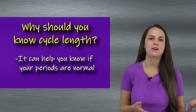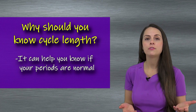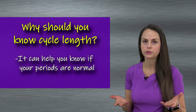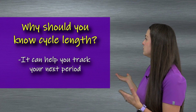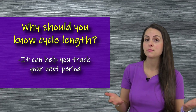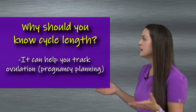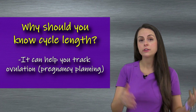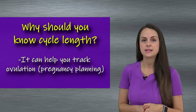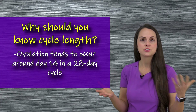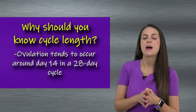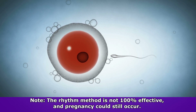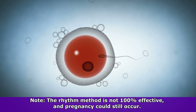Finally, why is it beneficial to know your menstrual cycle length? It's helpful in understanding if you're having normal regular periods — is it occurring within that 21 to 35 day cycle? It also helps you know when to expect your next period. In addition, it can help you track ovulation if you're trying to increase your chances of getting pregnant or preventing pregnancy. Ovulation, if you have an average cycle of 28 days, tends to occur on cycle day 14 — letting you know when to try to conceive or when to avoid pregnancy.